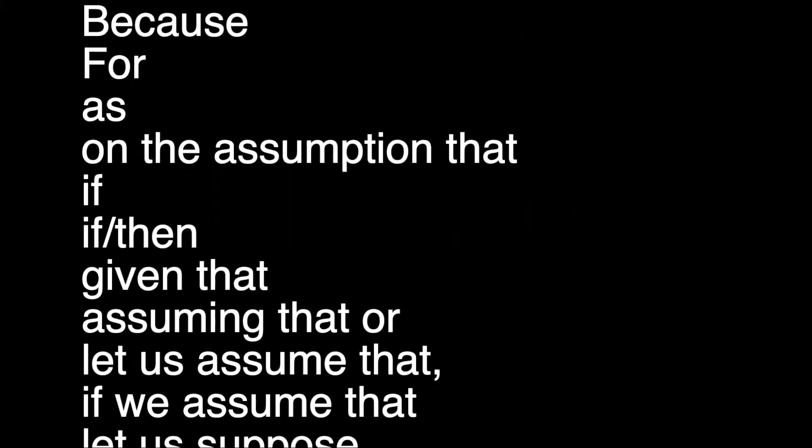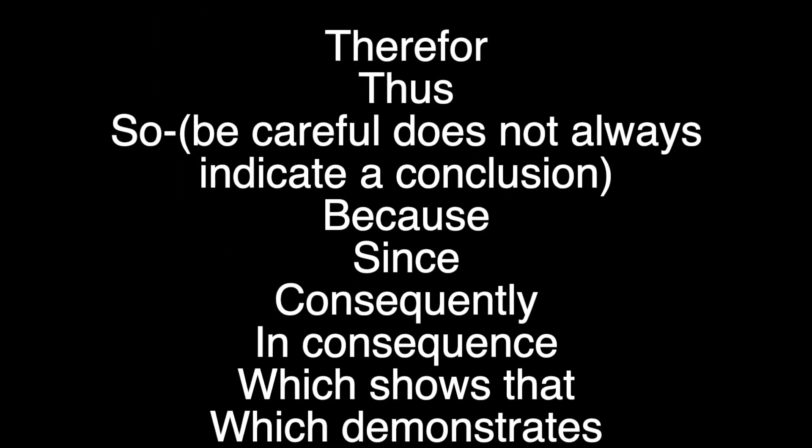Once we have done this, we can begin to evaluate the argument itself to see if it actually proves its claim, also known as the conclusion. Here is a list of some of those premise indicator words — let's go ahead and pause the screen if you need to write them down. And here is a list of conclusion indicator words. It is worth mentioning that just because we see an indicator word does not mean that there is a premise or a conclusion.